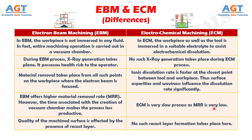Number 10: In electron beam machining, the quality of the machined surface is affected by the presence of a recast layer, whereas no such recast layer formation takes place in electrochemical machining.